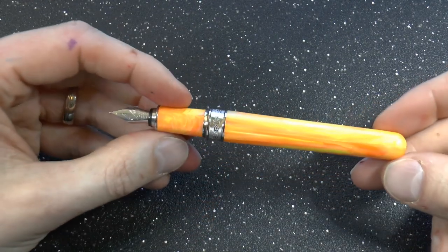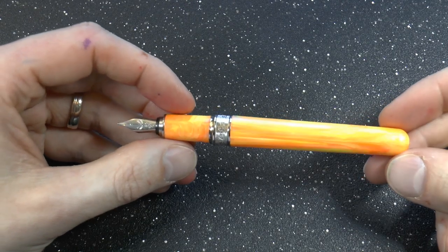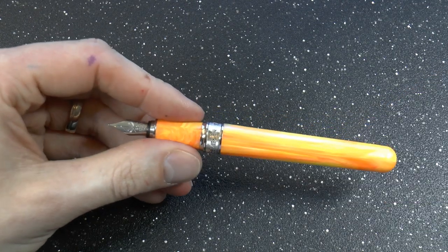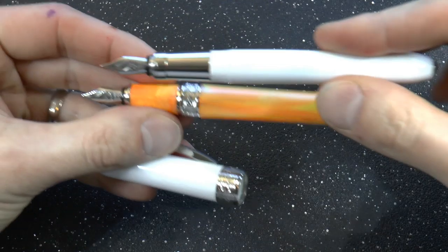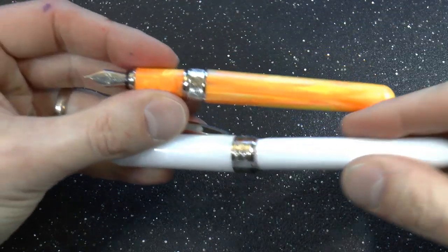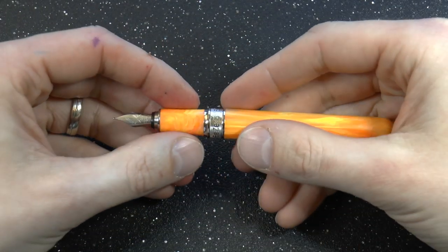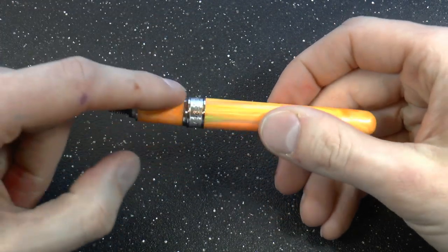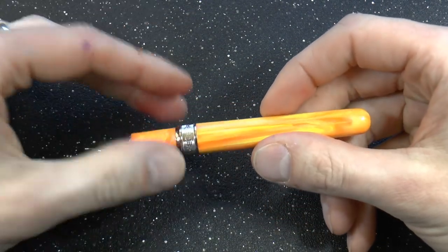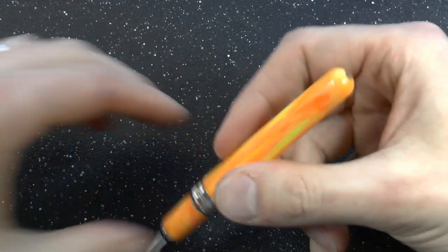The section is matching to the barrel. That, in my mind, is always bonus points. If you look at the Rembrandt, for example, that has a metal section which not everybody enjoys. It can get a little slippery, but I think this is rather nice. Plus this is a very nice material, I'm assuming an acrylic, but it looks really neat.